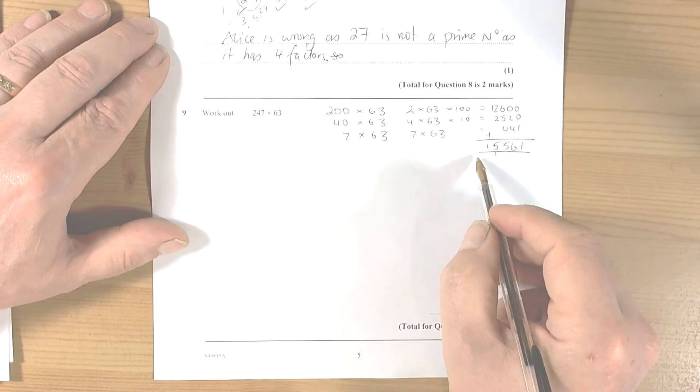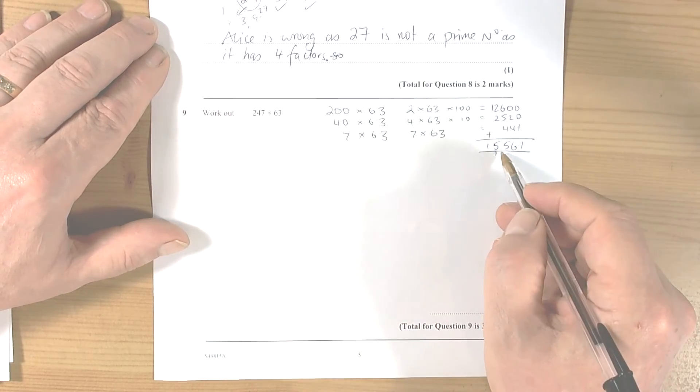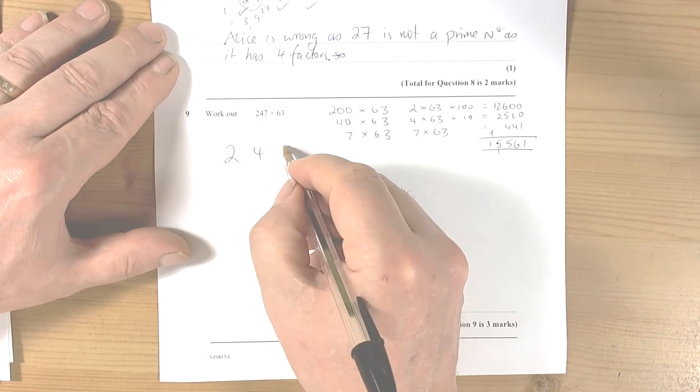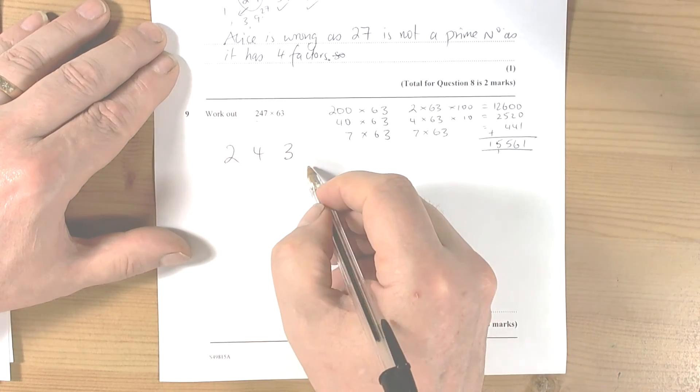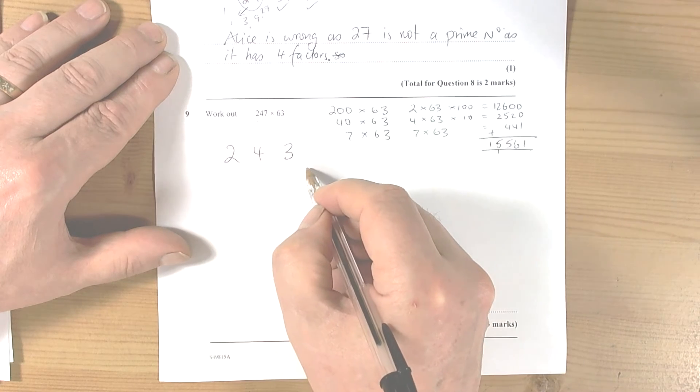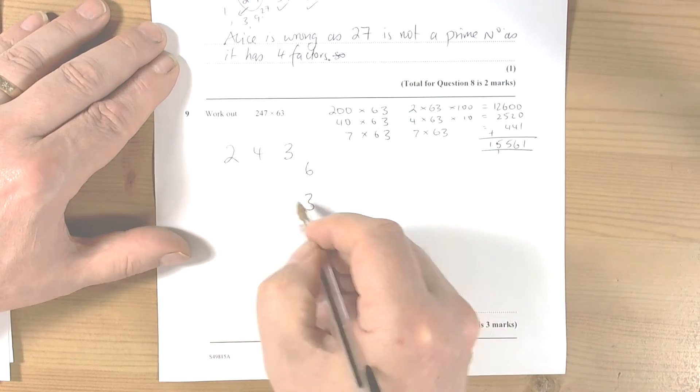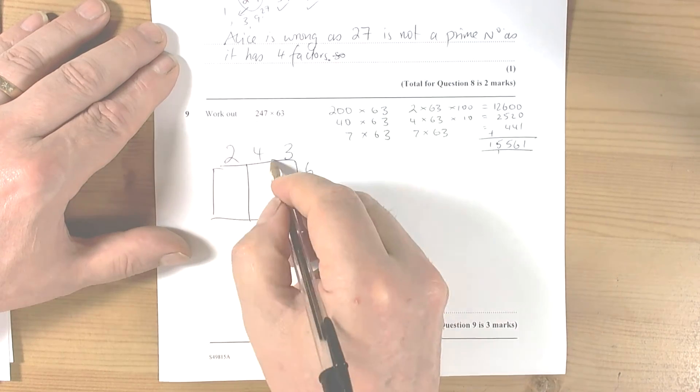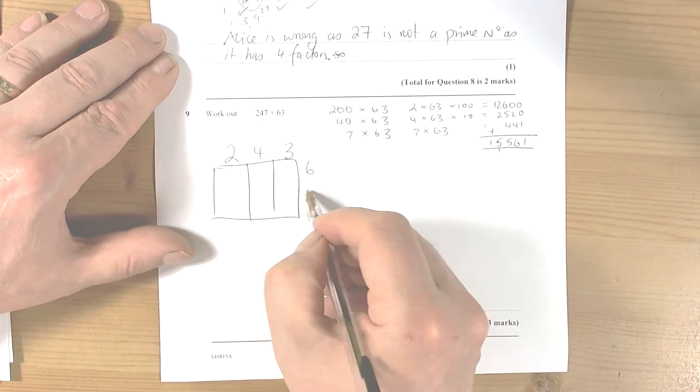So 15,561. Another way of doing this would be to use the Gelosia or Chinese method or Napier's method, however you've believed it came up with it first.